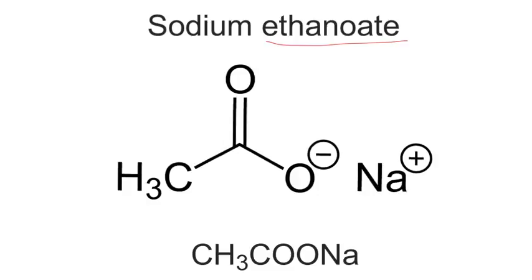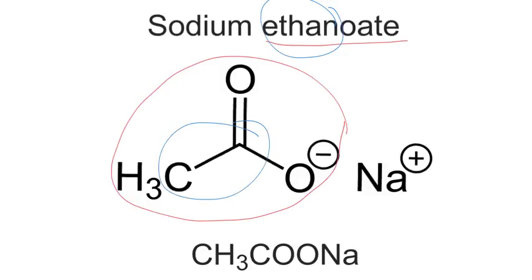Now the bit I've underlined just in red for you there is specifically referring to this bit on the left of the diagram just below. And you can see the ethan part of this is the number of carbons here. So that's one, two carbons that are inside the chain that connect to the sodium.